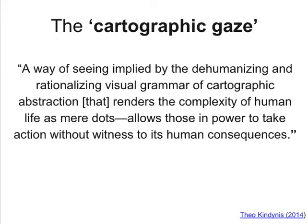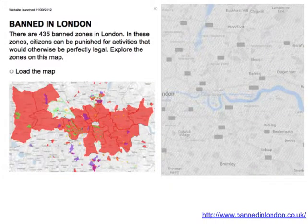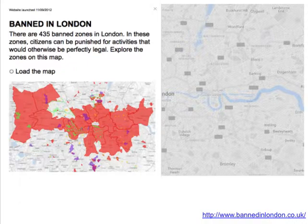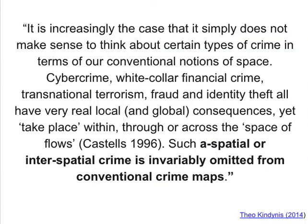For example, this story on banned zones in London — where people can be punished for activities that would otherwise be legal — draws a number of shapes on the landscape of London and uses colouring, but we don't have any sense of the human dimension: who's affected, what they're like, or what the effects are.